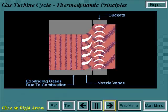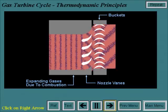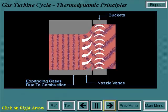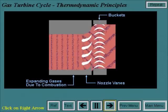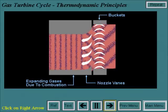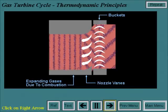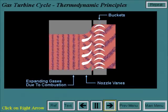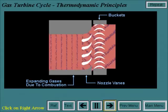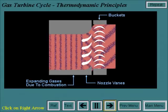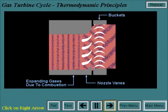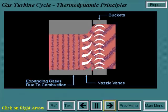In the subsequent bucket section of the turbine, a portion of the kinetic energy is transferred to the rotating buckets and converted to work. Typically, more than 50% of the work developed by the turbine section is used to power the axial flow compressor.